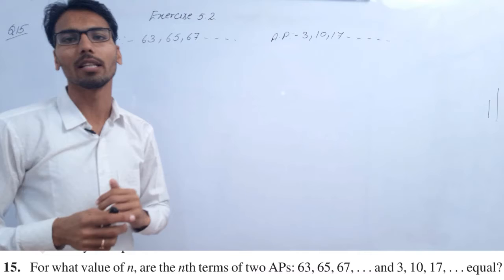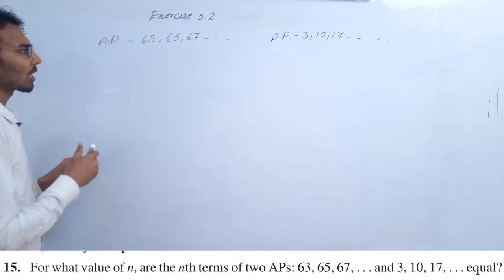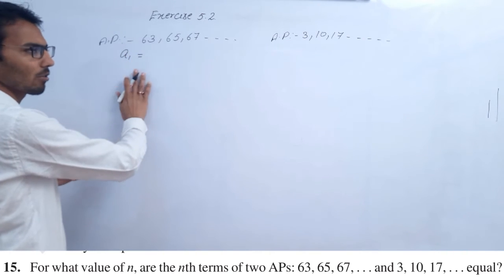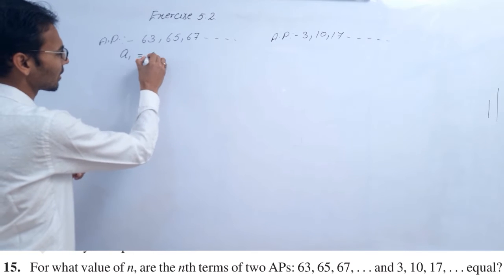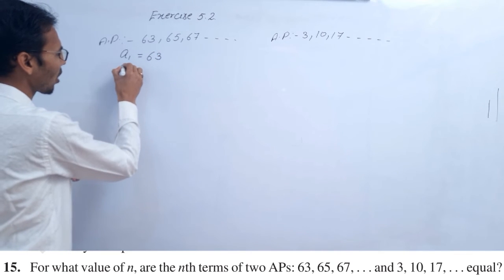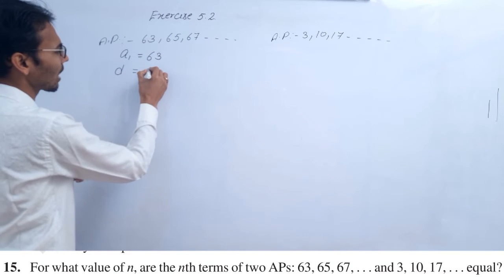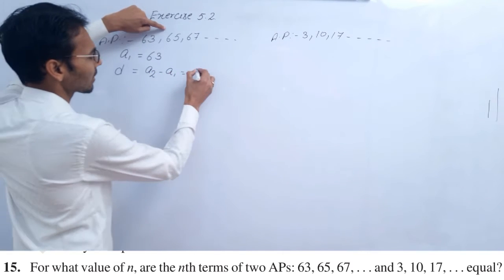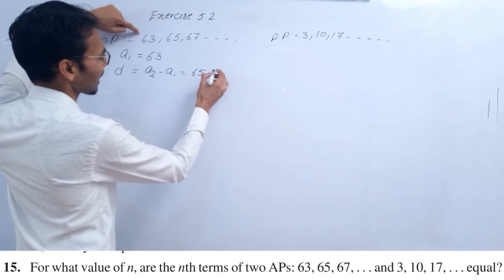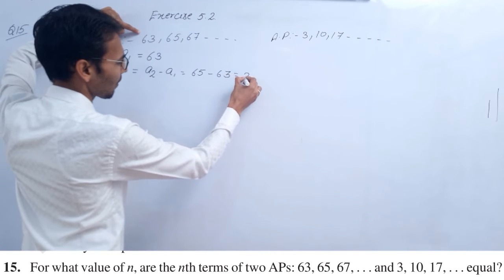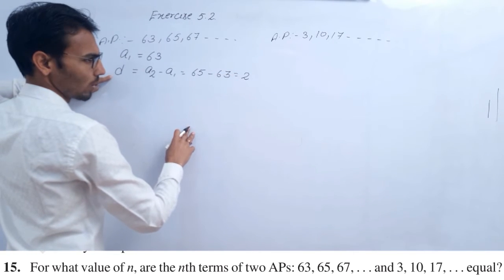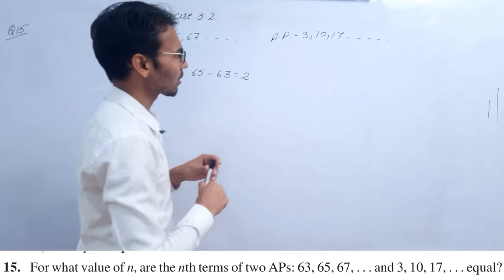Let's talk about this AP. The first term a is 63, and the common difference d is a2 minus a1, which is 65 minus 63, so this becomes 2. First term is a=63, common difference d=2.